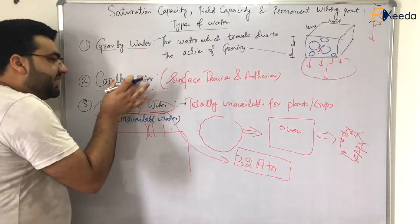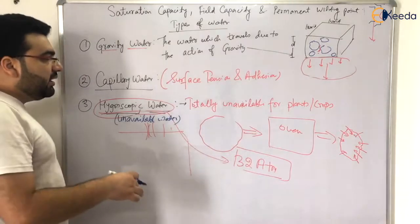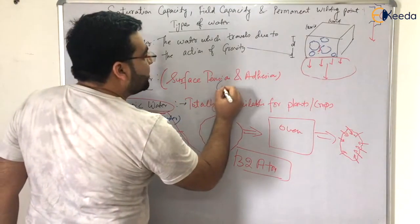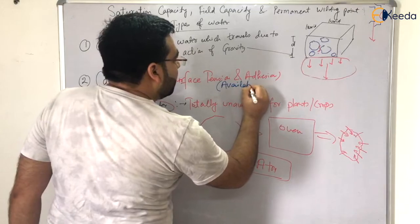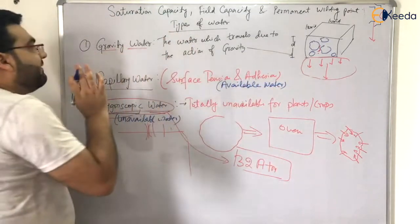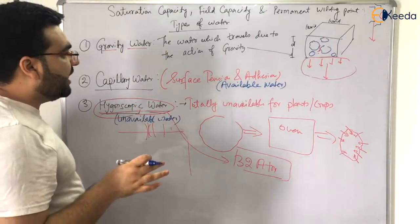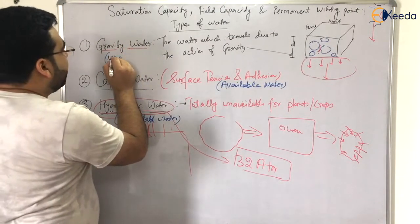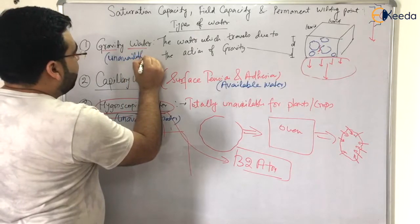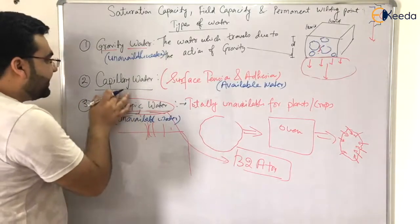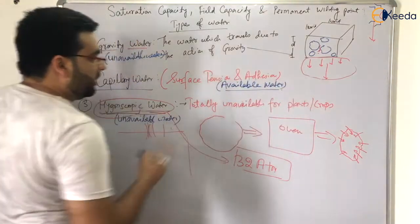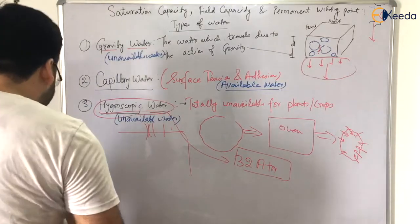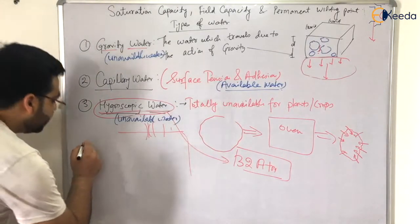Hygroscopic water and gravity water are both unavailable water. The capillary water is responsible for the growth of plants and is also known as available water. The fourth type of water is structural water.